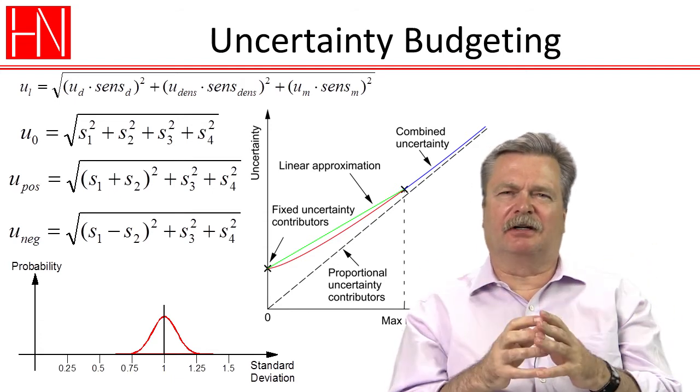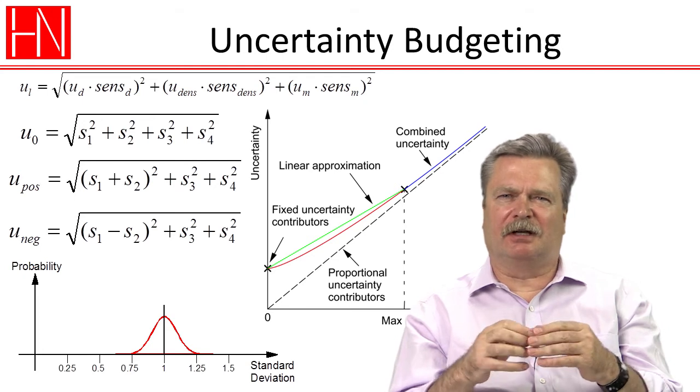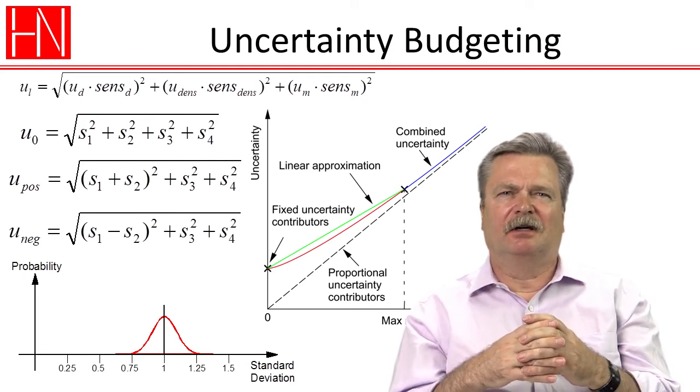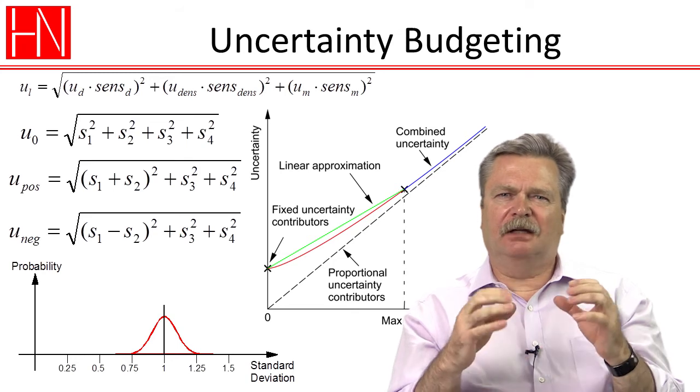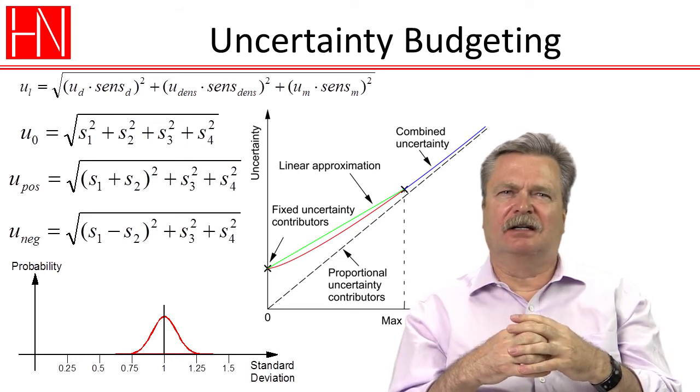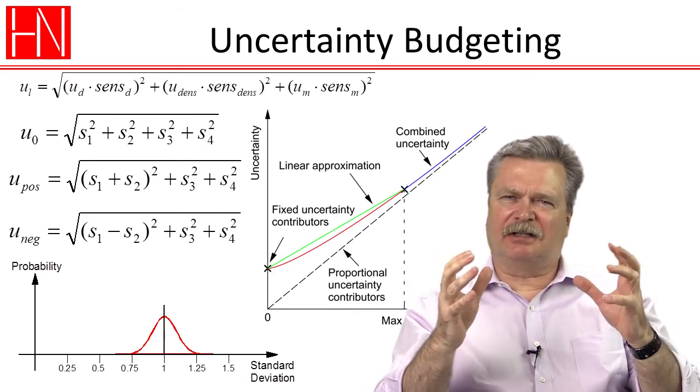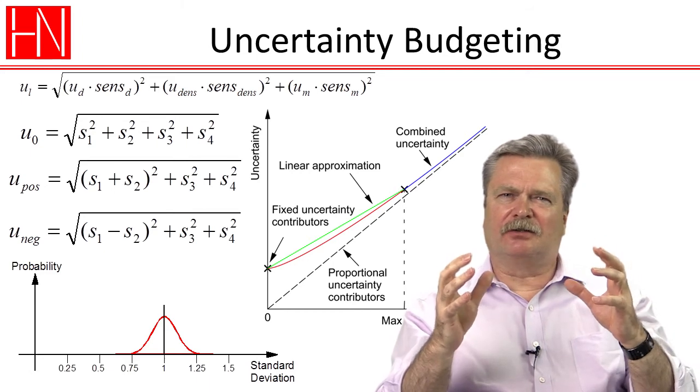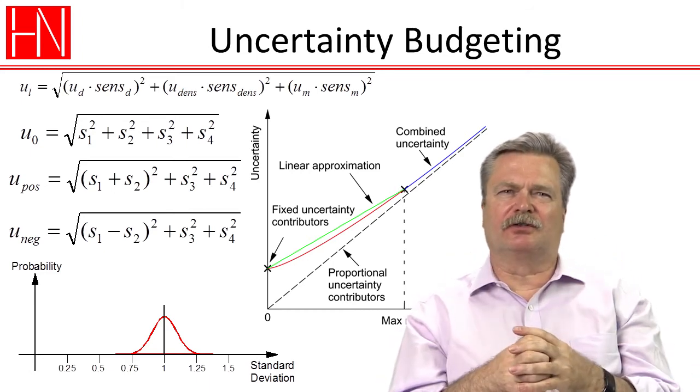We also went through the details of when we have a complex measurement situation like the one where we determine the length from the diameter, the density, and the mass. How we then have to calculate a sensitivity coefficient for each of the measurements to find the overall uncertainty for the entire measurement.